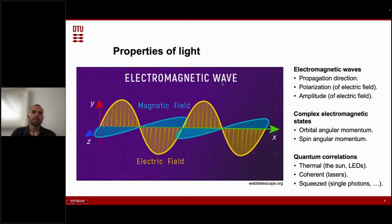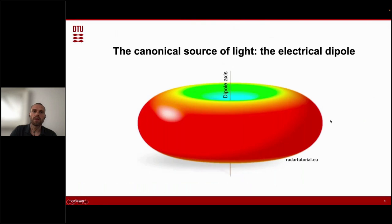So from a slightly more nerdy perspective, light is electromagnetic waves. And this is what you would typically see in a textbook. I'm sure most of you in the audience have been through something like this in your electromagnetism course. There's an electric field and a magnetic field. And then you can characterize this as a propagation direction, polarization of the electric field, amplitude of the electric field. You can also form more complicated states that don't exactly look like this with angular momentum. And then you can also, if you're interested in the quantum applications, study the quantum correlations and statistics of the optical field.